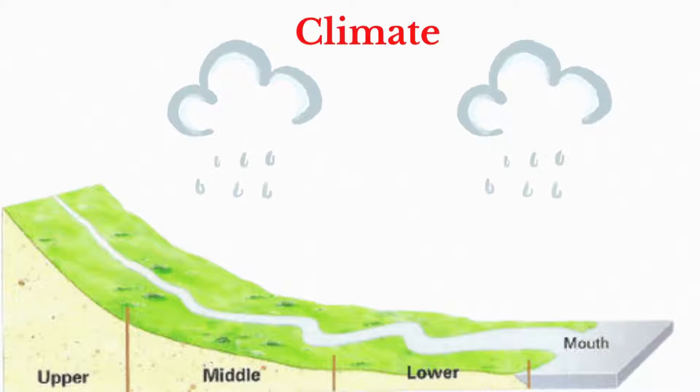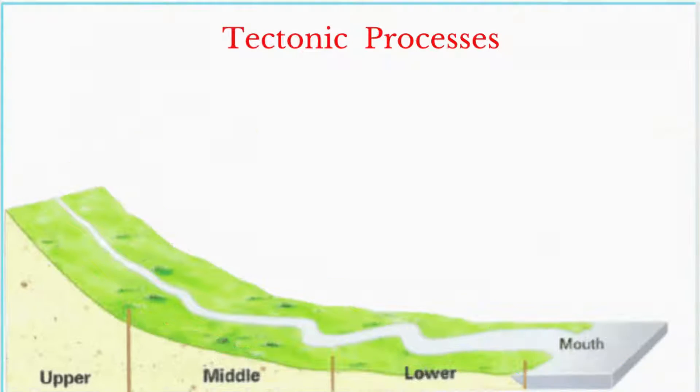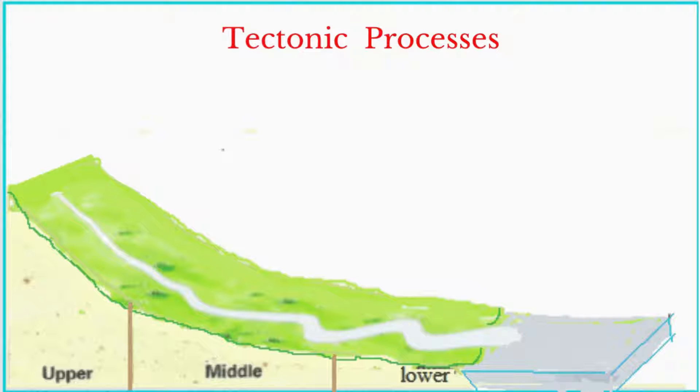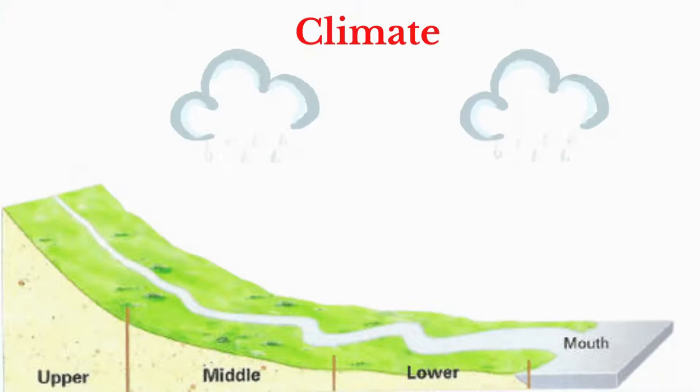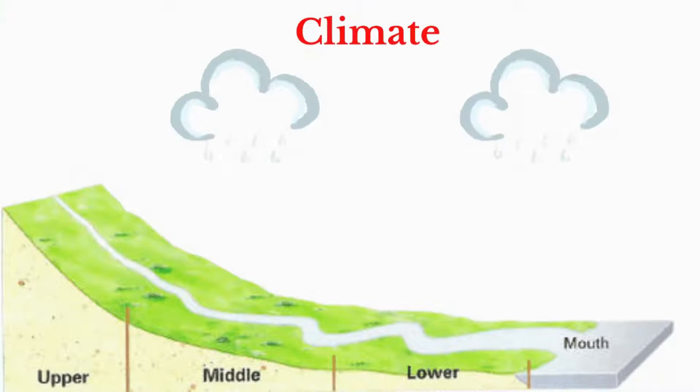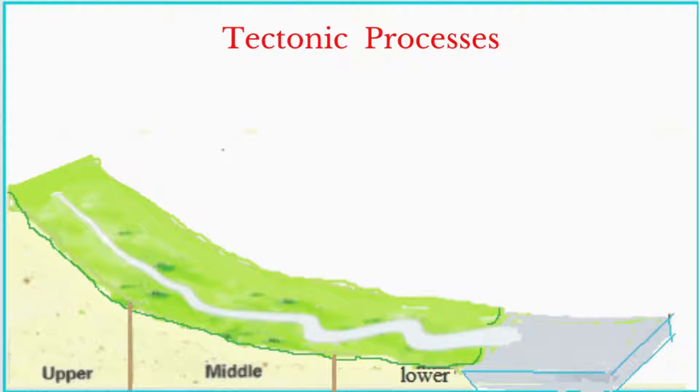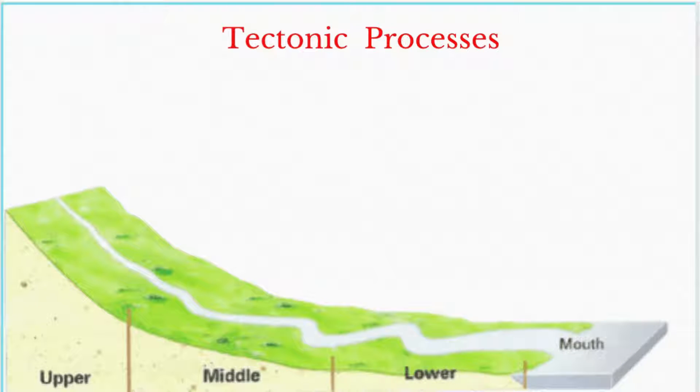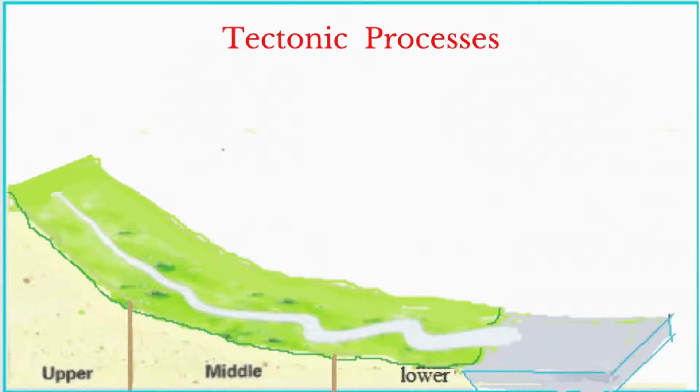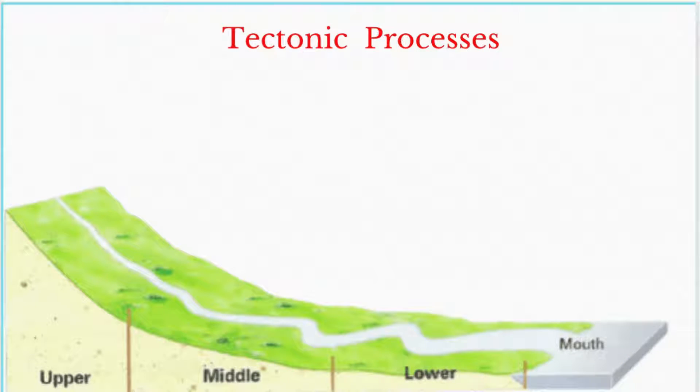When we look at a river in its long profile, we are looking at the section of the river's course from its source where it starts to its base level. And when we talk about base level, we're talking about the lowest level to which erosion by running water can take place. For a river, this is usually the sea level.